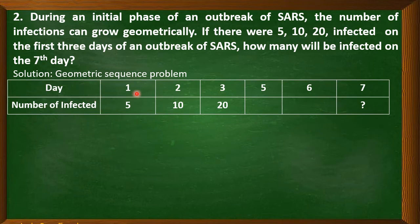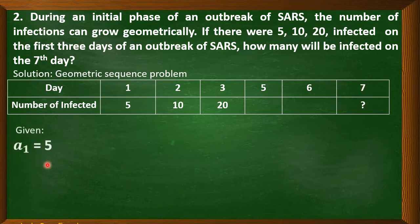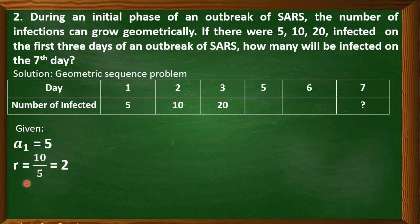To illustrate it further: for day 1, number of infected is 5; day 2, we have 10; day 3, we have 20. We are asked to find the number infected on the seventh day. Let us determine the given. The first term is 5. For the common ratio: 10 divided by 5 equals 2. So 2 is the common ratio. And N is 7 because we are asked to find infections on the seventh day.